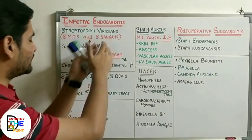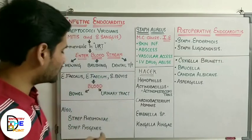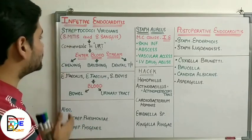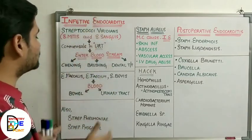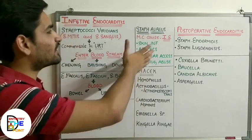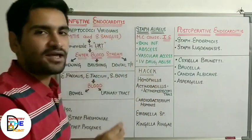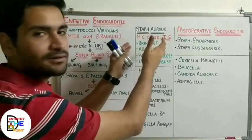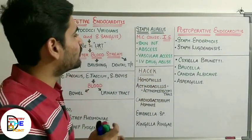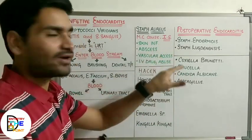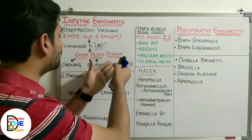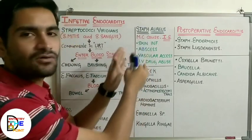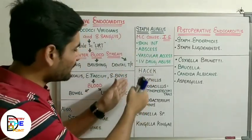So we discussed S. mitis, S. sanguis, E. faecalis, E. faecium, and Streptococcus bovis. There are also two other groups: Streptococcus pneumoniae and Streptococcus pyogenes, which also cause infective endocarditis. Regarding the Staphylococcus group — it was previously considered that Streptococcus was most common, but now Staphylococcus has become the most common causative organism. They can enter the bloodstream via skin infection, abscesses, vascular access, dental treatment, or intravenous drug abuse.